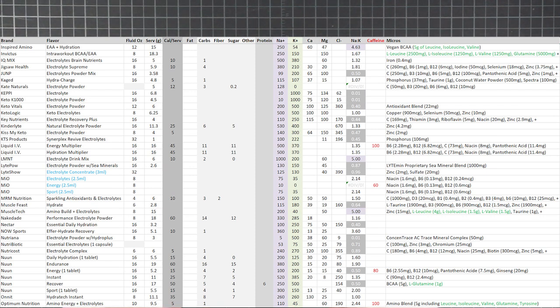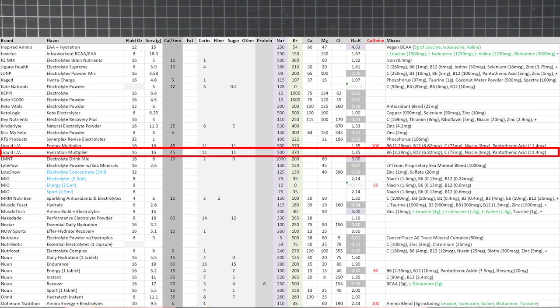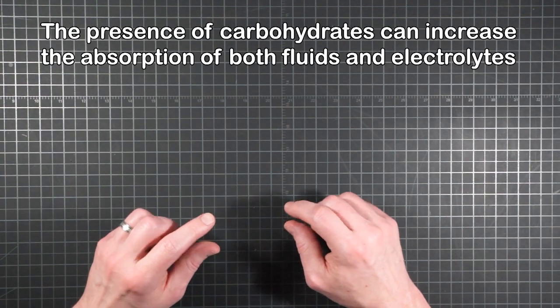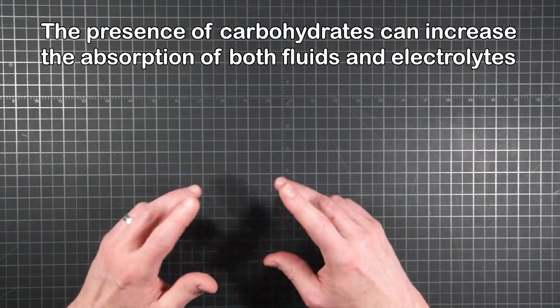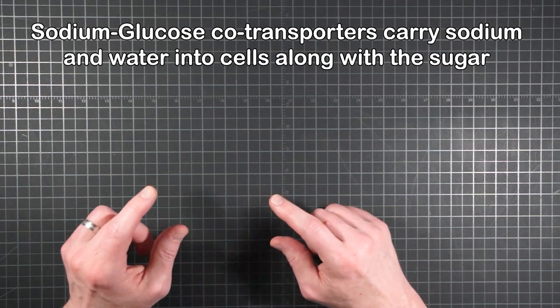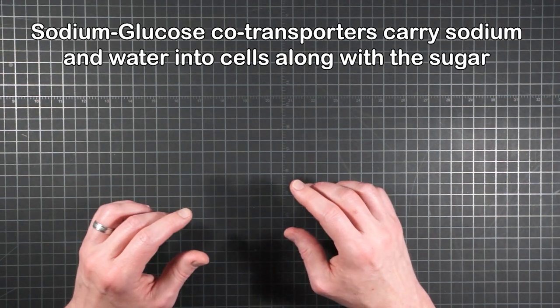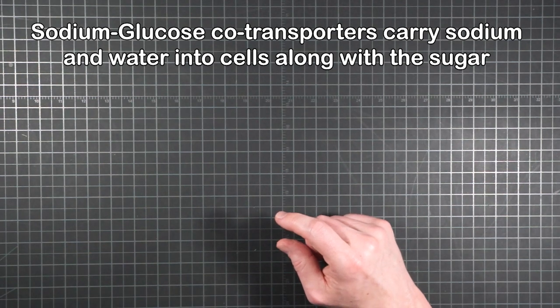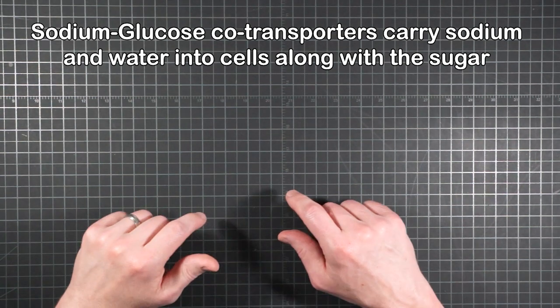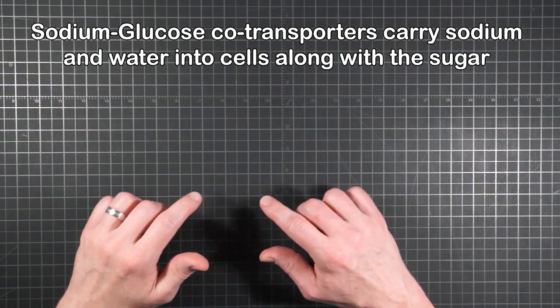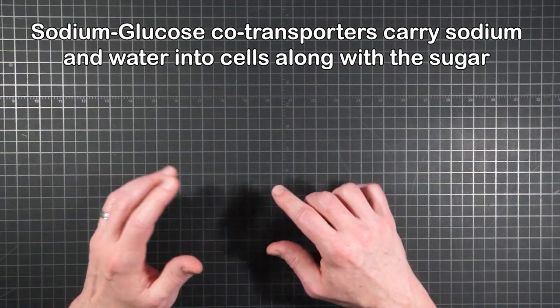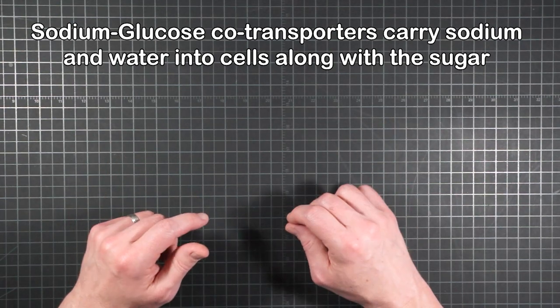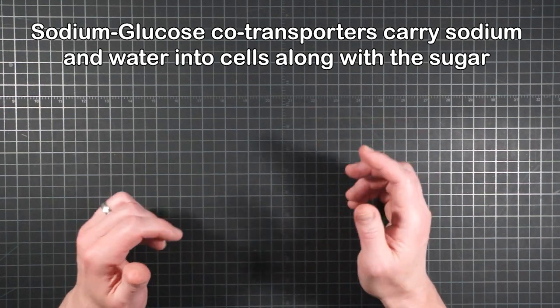But even where the sugars are only present in trace amounts, they serve a distinct purpose for hydration itself. Carbs can increase the intestinal rate of absorption for both fluid and electrolytes. There are sodium glucose co-transporters that help usher nutrients into your body. When glucose is present, these transporters kick in and help not just with sugar uptake, but sodium and water go along for the ride as well. This helps increase your overall hydration rate.